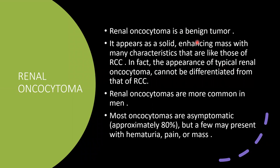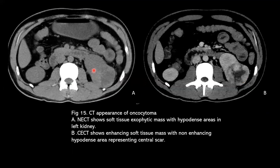Renal oncocytoma is a benign tumor. It appears as a solid enhancing mass with characteristics similar to RCC; in fact, typical renal oncocytoma cannot be differentiated from RCC on imaging. It is more common in men and is usually asymptomatic but may present with hematuria, pain, or a palpable mass. NECT shows a soft tissue exophytic mass with hypodense areas. CCT shows an enhancing mass with a non-enhancing hypodense area representing a central scar.